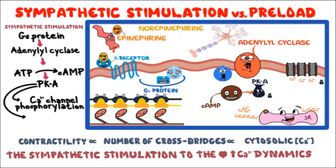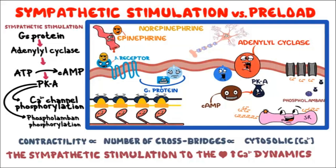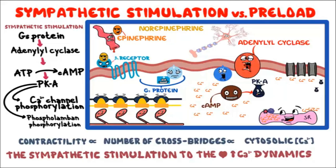Second, protein kinase causes phosphorylation of phospholamban. When phosphorylated, this protein stimulates the calcium ATPase in the sarcoplasmic reticulum, resulting in greater uptake and storage of calcium there. Increased calcium uptake by the sarcoplasmic reticulum has two effects: first, it causes faster relaxation, because it uptakes the calcium that participated in contraction immediately after it does its job; second, it increases the amount of stored calcium for release on subsequent beats, because at every beat a lot of calcium enters the cell via phosphorylated L-type calcium channels.